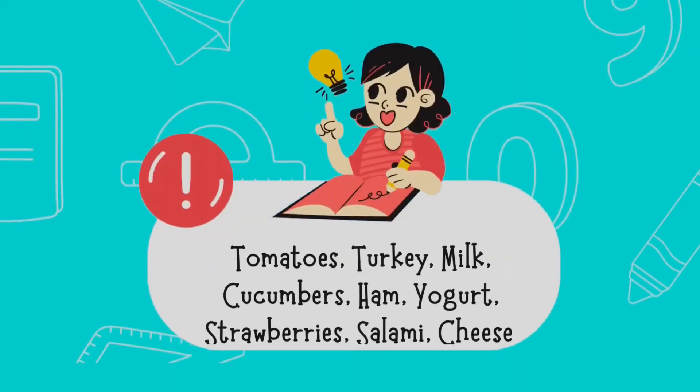This doesn't just apply to memorizing random letters. It also applies to daily tasks, chores, and studying. Here's another example. Memorize this string of words: tomatoes, turkey, milk, cucumbers, ham, yogurt, strawberries, salami, and lastly, cheese.